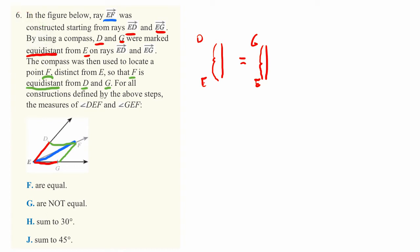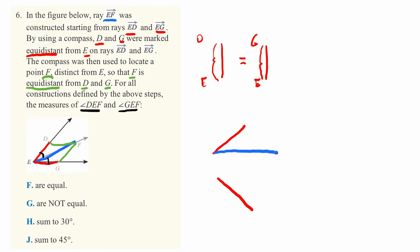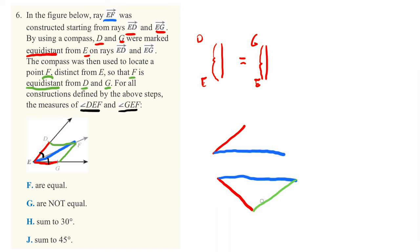For all the constructions defined by the above steps, the measure of angle DEF and angle GEF — what is true about them? The trick is to realize that we have two copies of the exact same triangle; the only difference is that one is flipped upside down. Both triangles have a red side, a blue side, and a green side, and matching colors have equal lengths. Since we have the same triangle just flipped, nothing changes about the angle between the red and blue sides. So those two angles are equal.